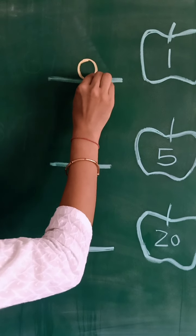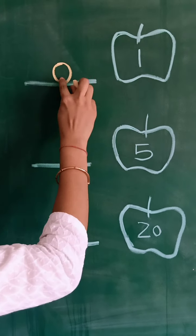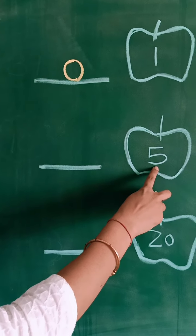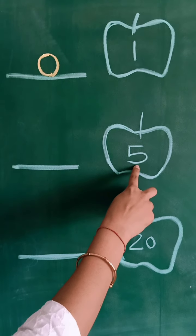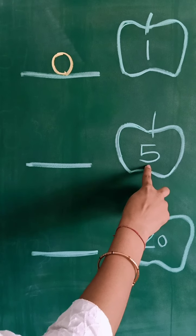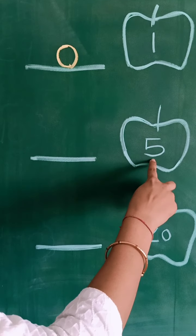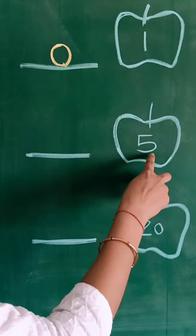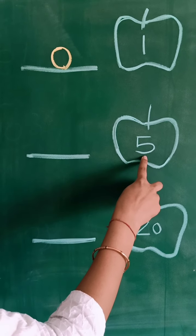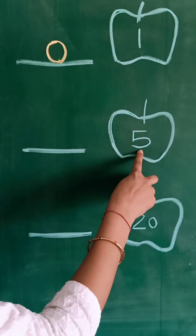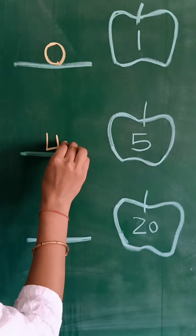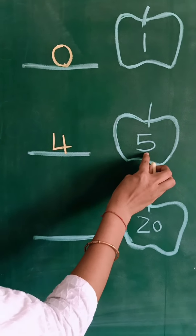0 comes before number 1. 0, 1. Next number is number 5. We speak 1 to 5 numbers: 1, 2, 3, 4, 5. Which number comes before 5? Number 4. 4, 5.